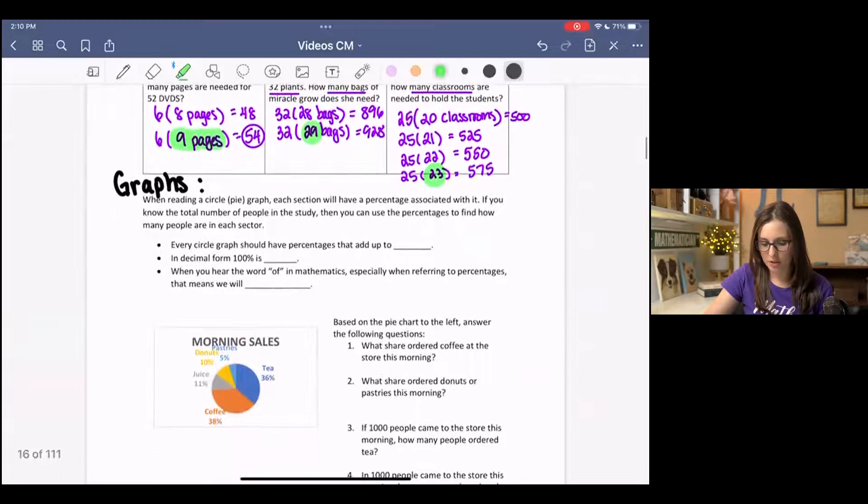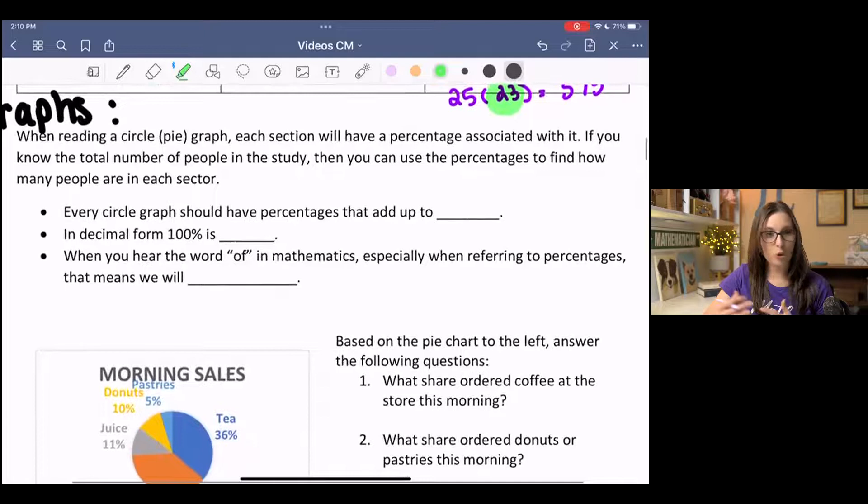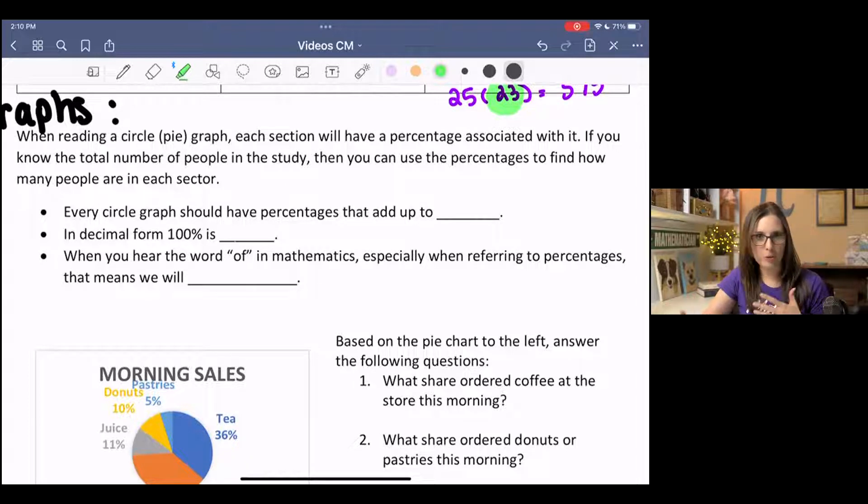Let's go on to graphs, reading graphs. When reading a circle or a pie graph, each section will have a percentage associated with it. If you know the total number of people or observations or whatever's being studied, then you can use the percentage to find out how many observations are in each section. So if you have the percentages and you have the total, then you can figure out some more information.